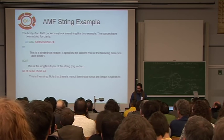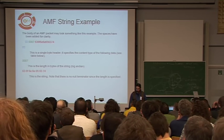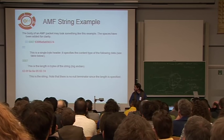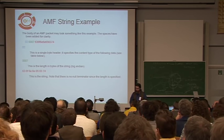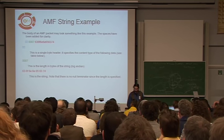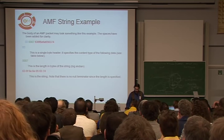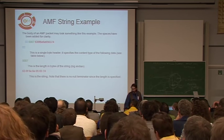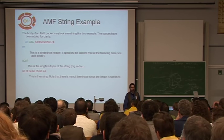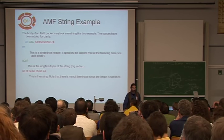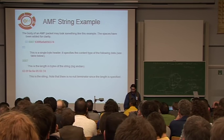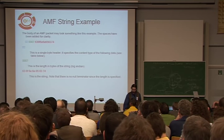So pretty much, an AMF packet more or less looks like this — this is a pretty simple one. It's got the type field in blue on one side, then the length field, and then the actual string. A lot of protocols actually don't do null terminators, which most C programmers are used to. So it's something to think about that you actually have to read the byte count — you just can't read until you hit null.